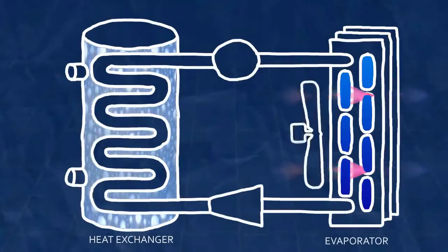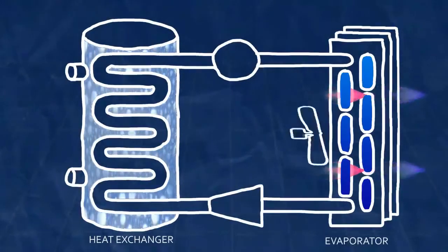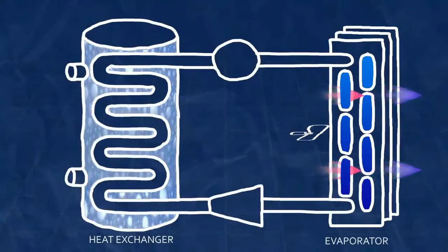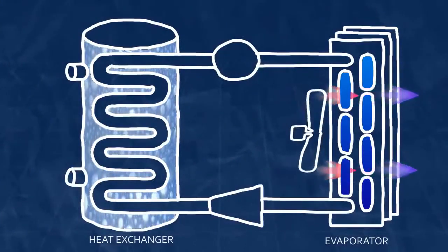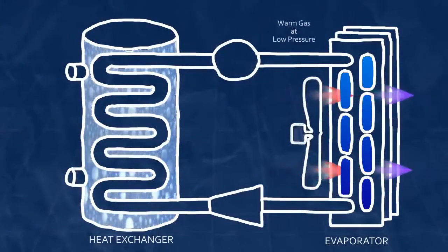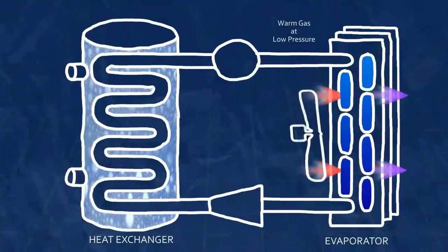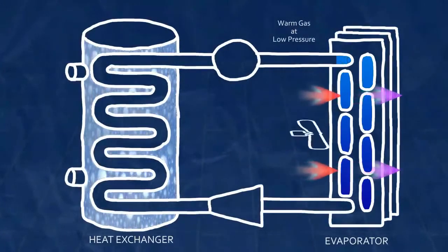As the refrigerant changes from a liquid to gas, large amounts of energy transfer take place. Once it's passed through the evaporator, the refrigerant is a warm gas, the cold liquid having been warmed and vaporized by the room air.